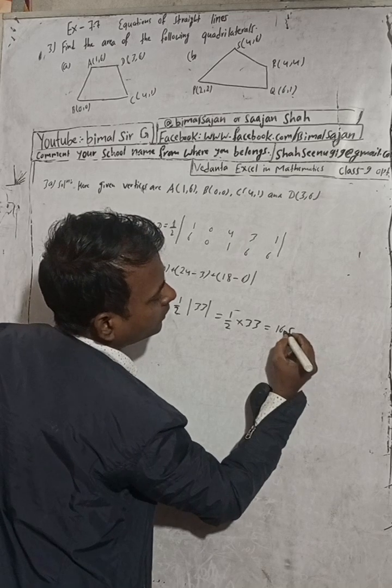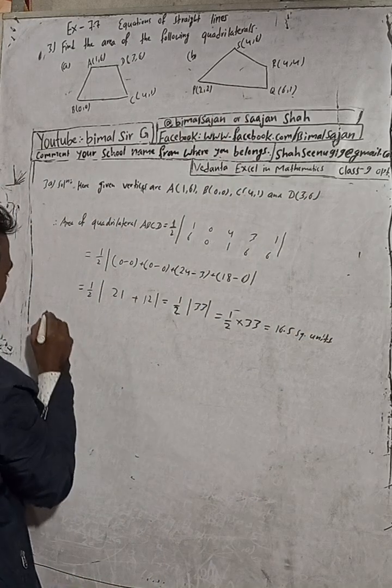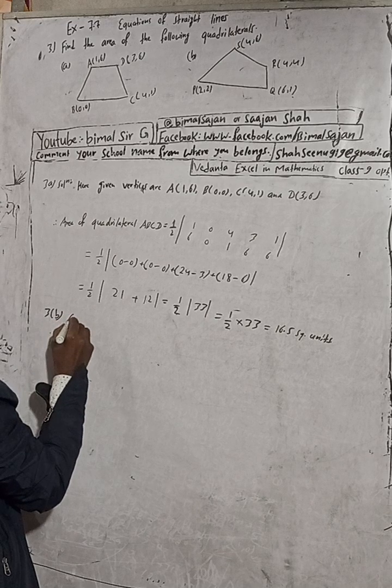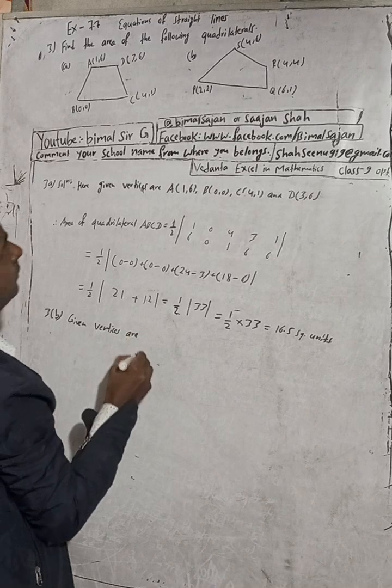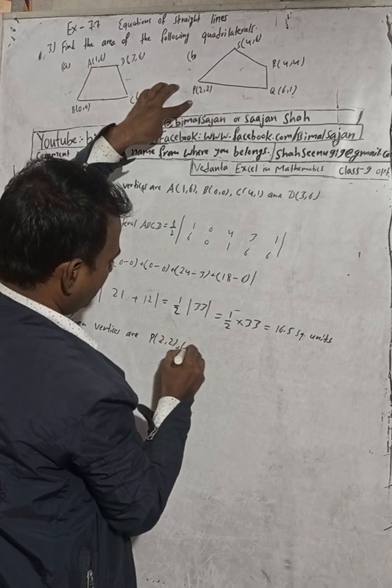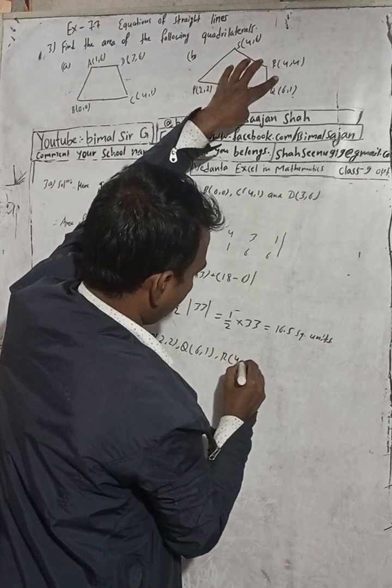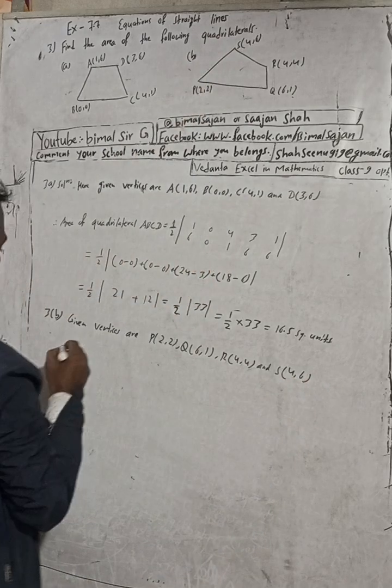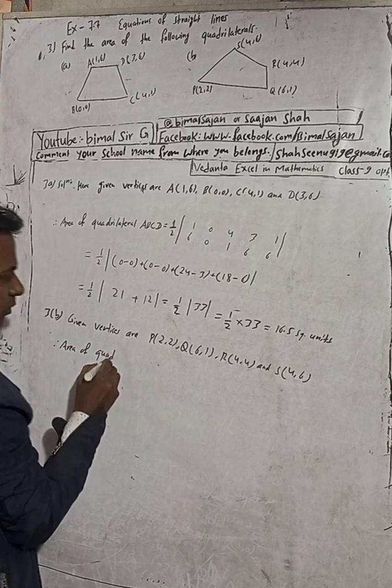So 33 divided by 2 is 16.5 square units. Now for part B, the given vertices are in anti-clockwise order. The area required of quadrilateral PQRS is equal to: